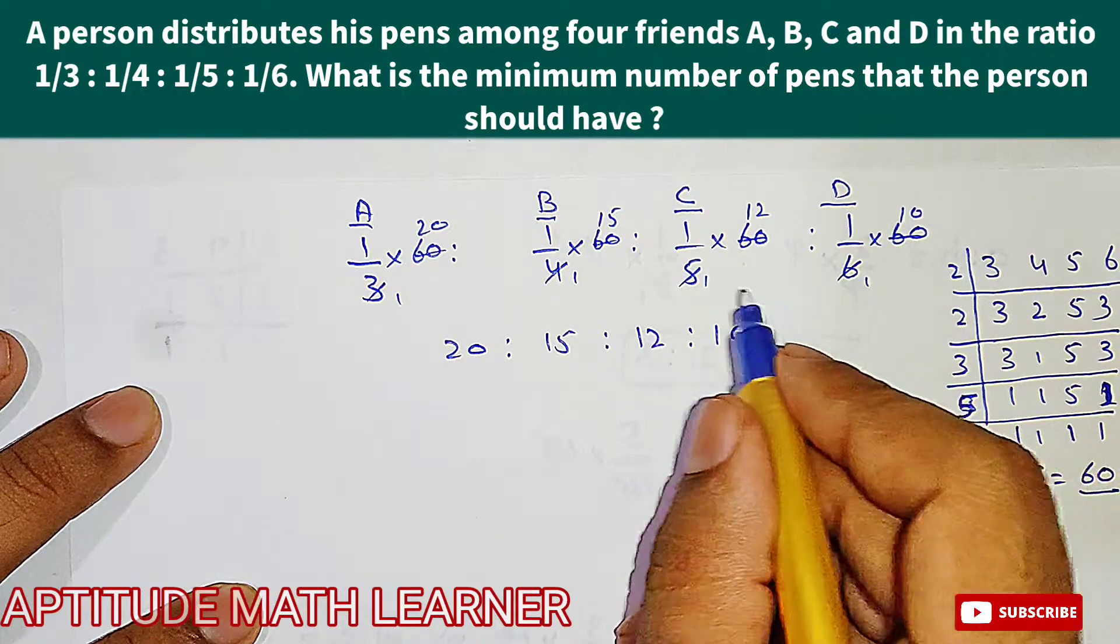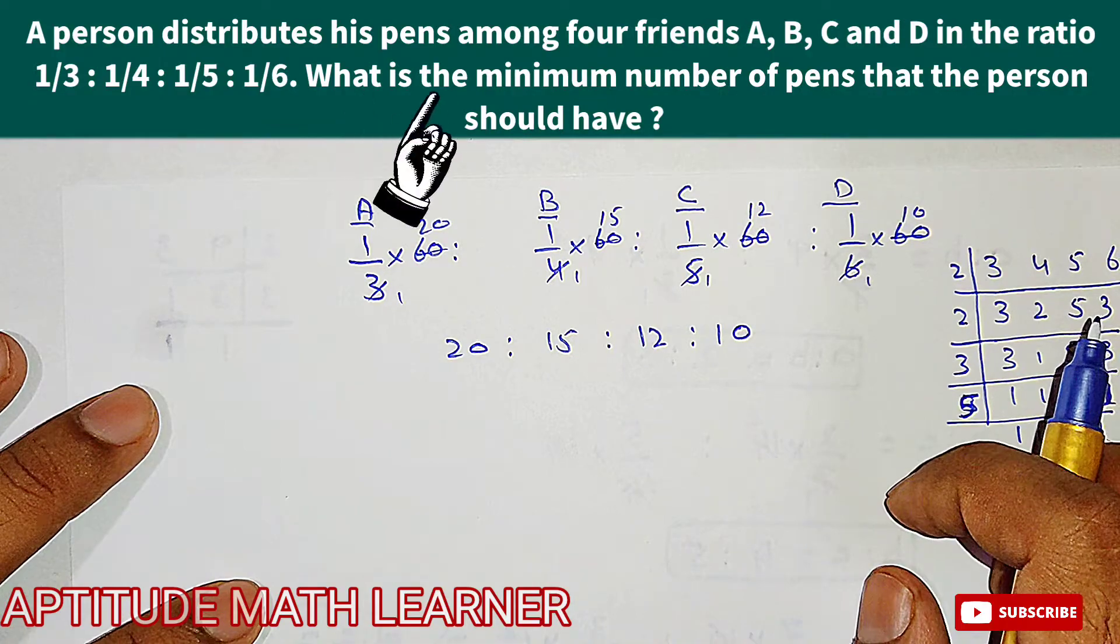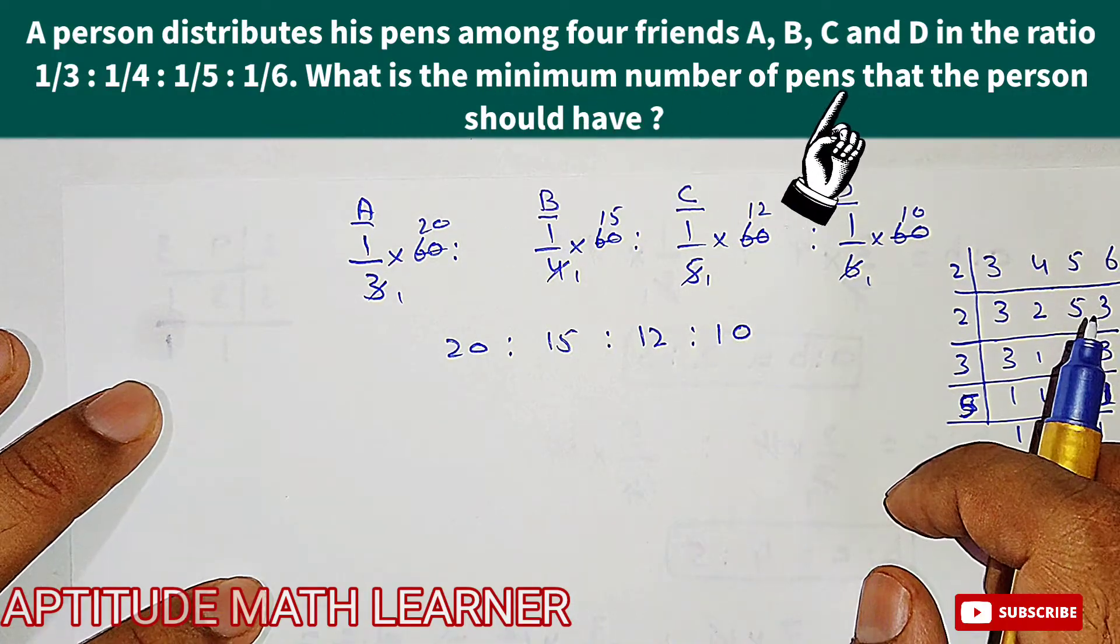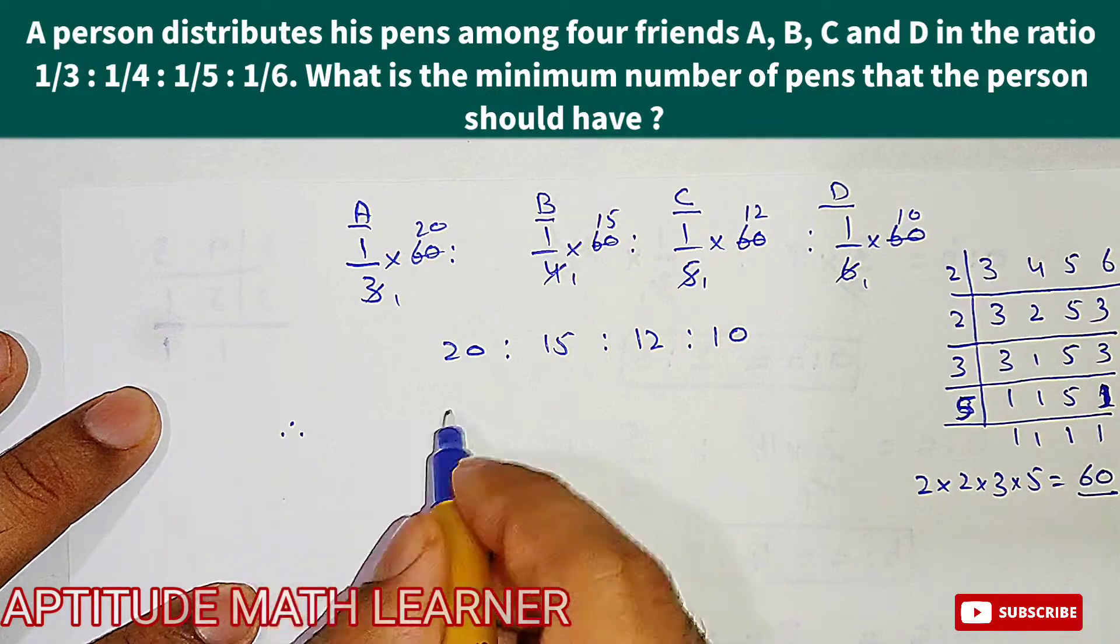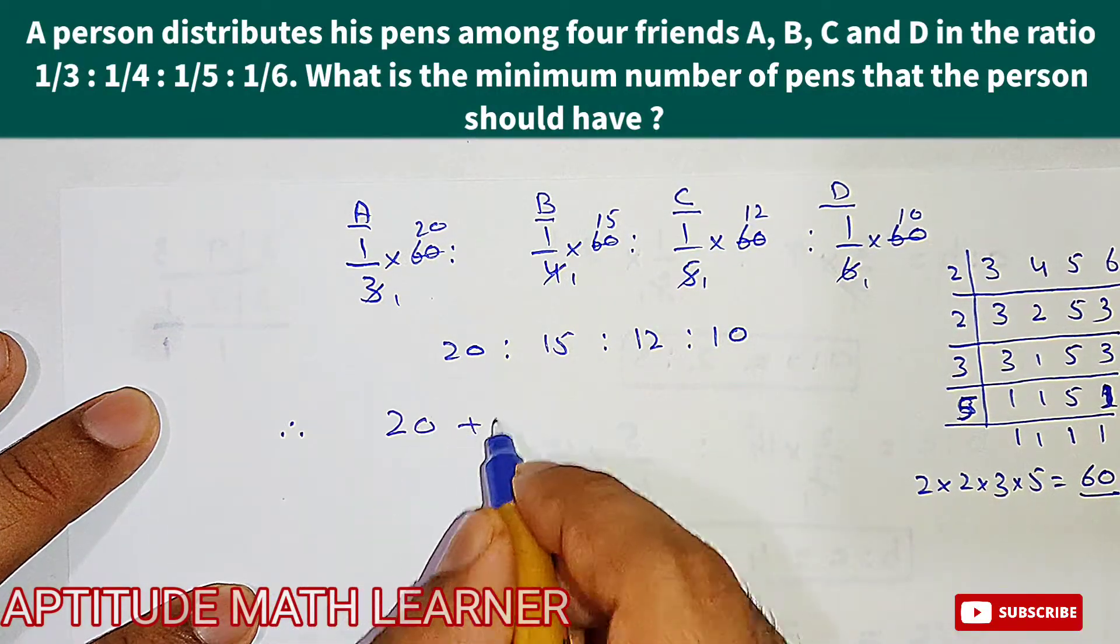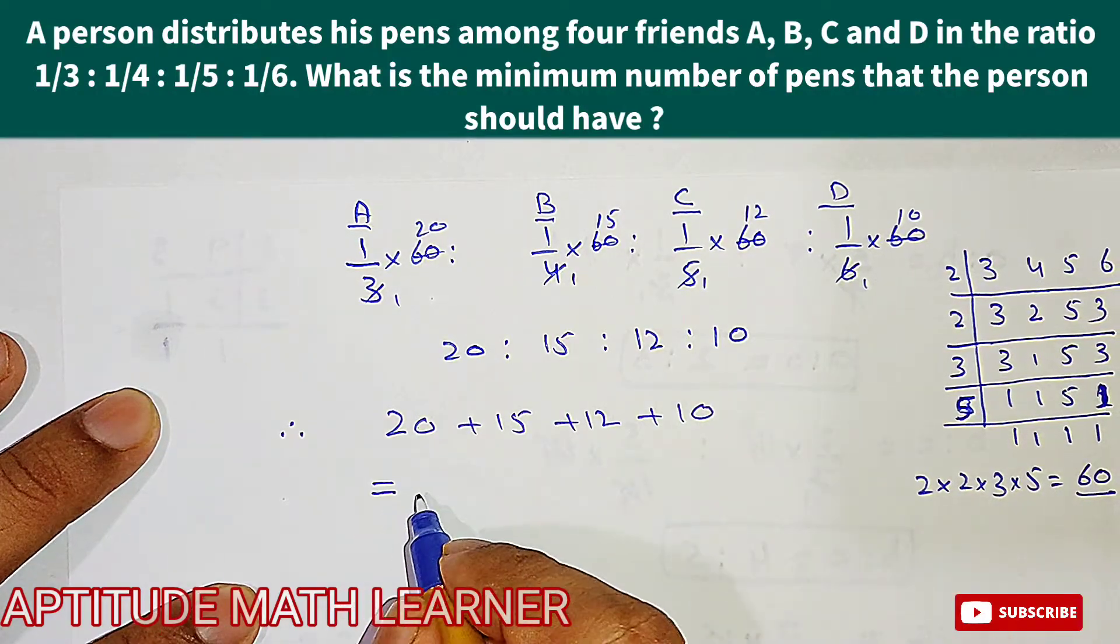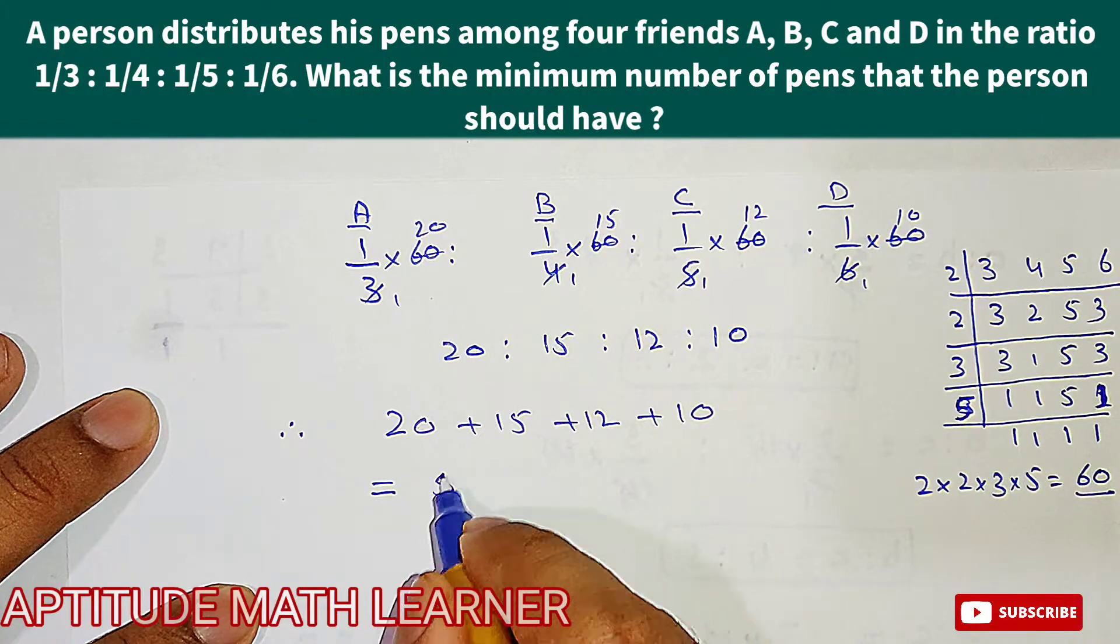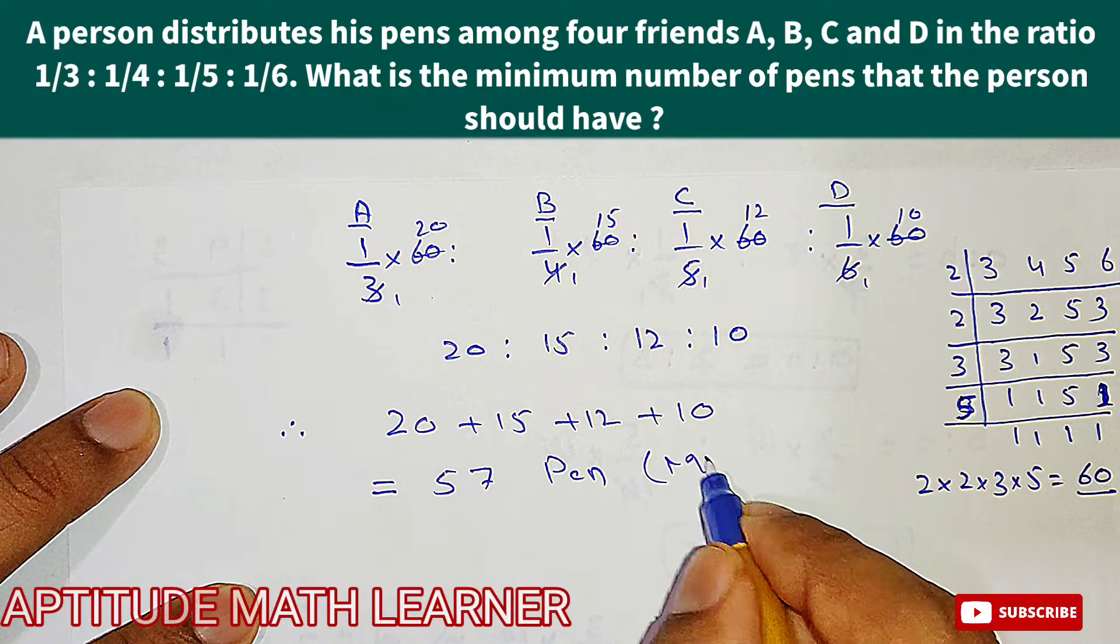Now we have got the ratios in proper form. Therefore, what is the minimum number of pens that the person should have? The minimum number will be - we add all these - so this becomes 20 plus 15 plus 12 plus 10, and this becomes 57 pens. This is the minimum number of pens the person has.